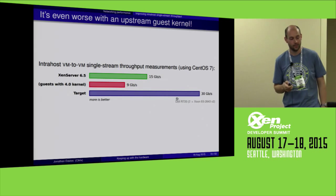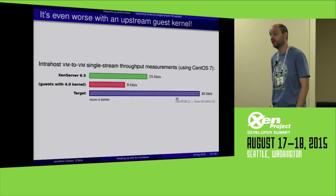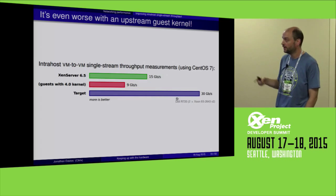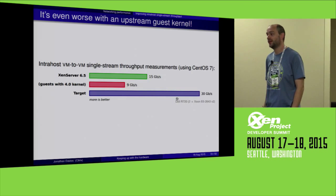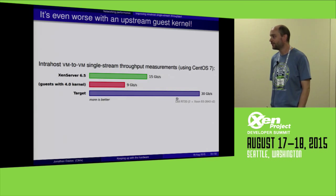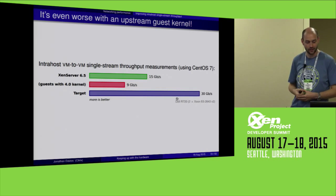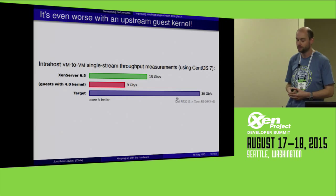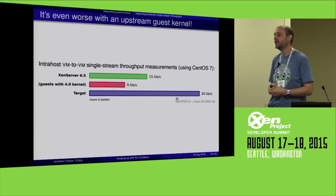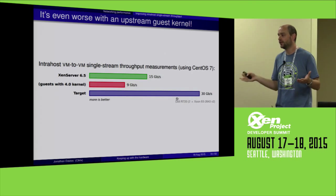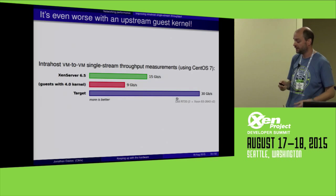It's even worse than that, because if I upgrade my CentOS 7 guests and put a 4.0 kernel in both of them, I've got a regular regression. We only get 9 gigabits per second between these VMs. So things are getting worse — the evolution of the Linux kernel has caused this problem. We're behind where we should be by a factor of two or three times.